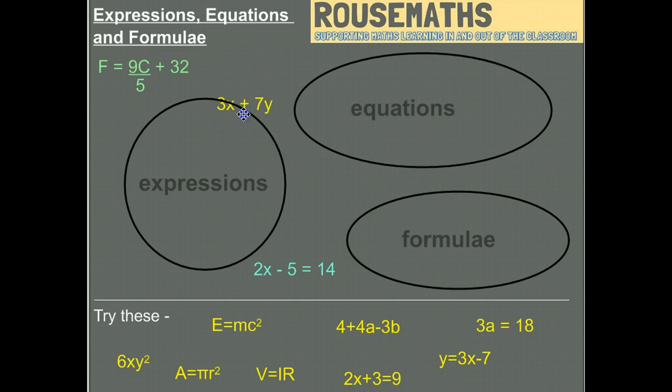First of all, we'll start with expressions. So this is our expression here. It's an expression because x and y can be anything. You've got to multiply x by 3 and multiply y by 7, but there's no exact value for x and y, and there's no equals, so it's an expression.